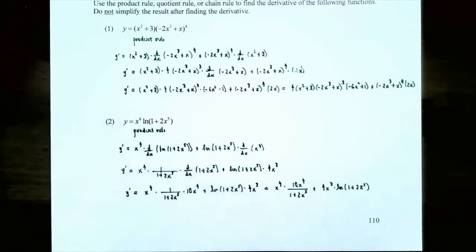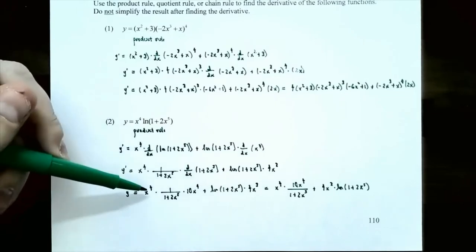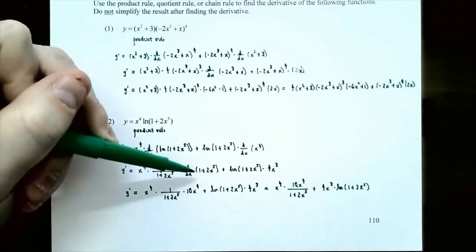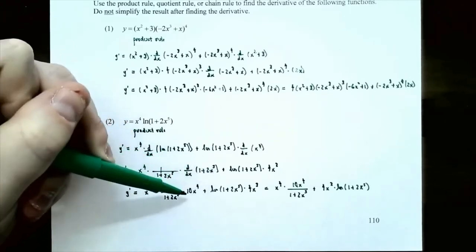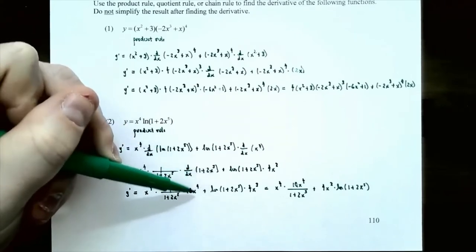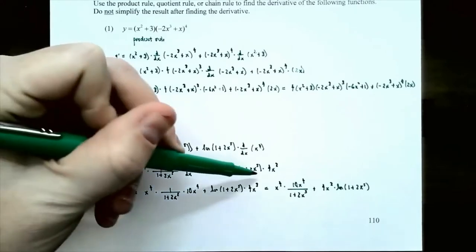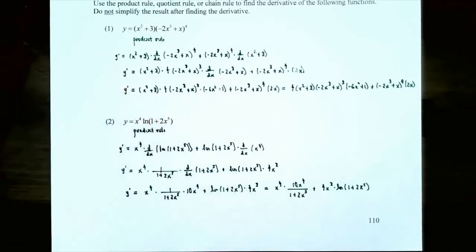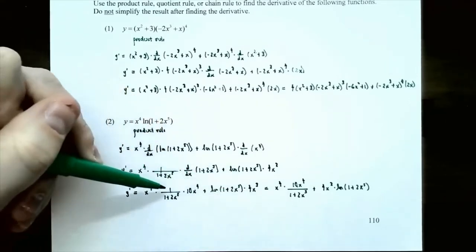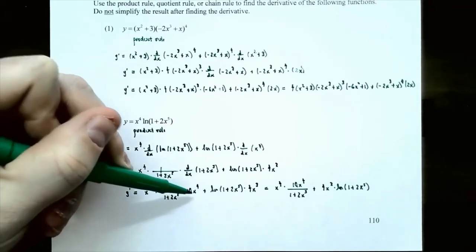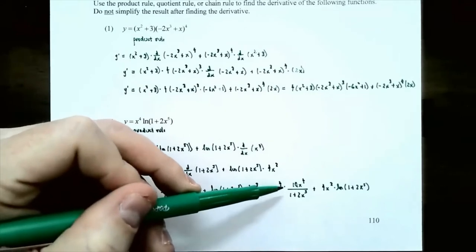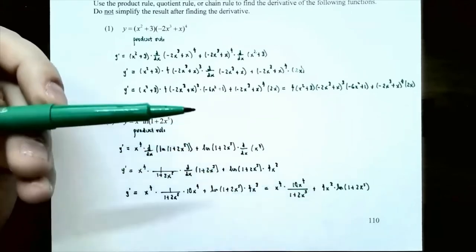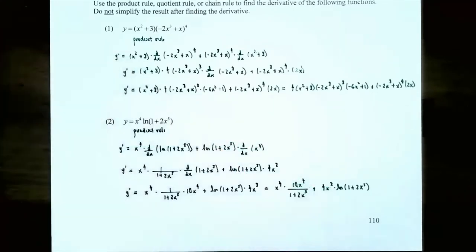We have one derivative left: the derivative of the inside function of the logarithm. y prime is x to the fourth times 1 divided by the quantity 1 plus 2x to the fifth in the denominator times the derivative of 1 plus 2x to the fifth. The derivative of 1 is 0 and the derivative of 2x to the fifth is 10x to the fourth. Plus natural log of 1 plus 2x to the fifth times 4x cubed. You can simplify slightly: x to the fourth times 10x to the fourth over 1 plus 2x to the fifth, plus 4x cubed times natural log of 1 plus 2x to the fifth.